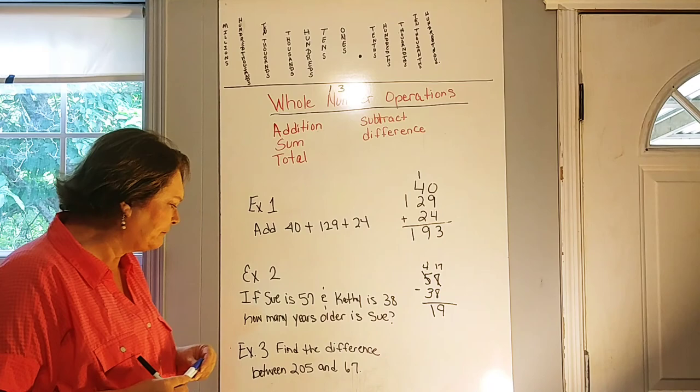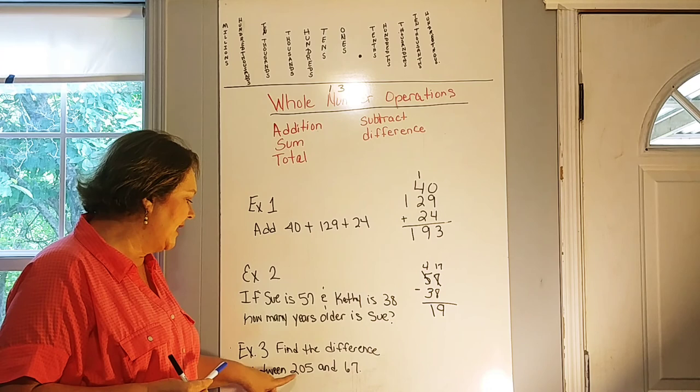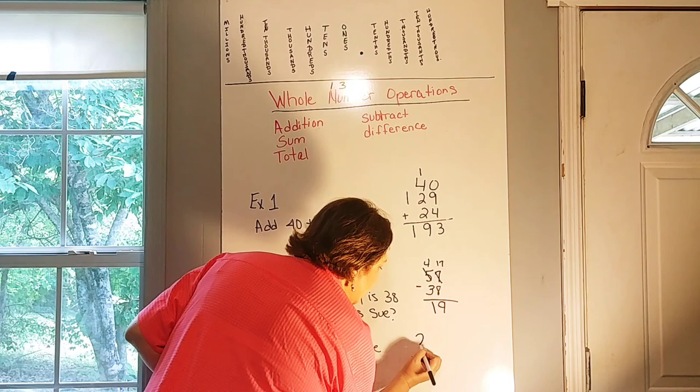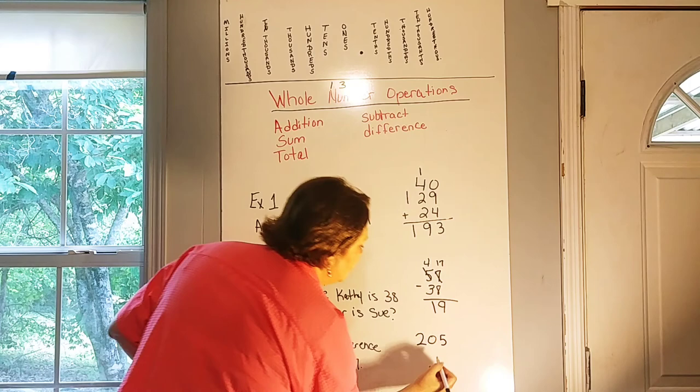Okay, our example number three asks us to find the difference between 205 and 67. So that's just asking us to subtract those numbers to find out what the difference is. So let's write those vertically because we like to line those numbers up whenever we can. It makes it a lot easier for us.